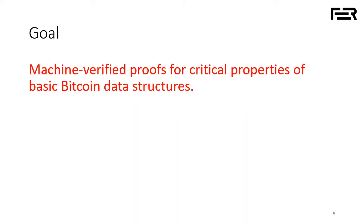The goal of this research is to provide formal models for the basic data structures of the Bitcoin system, use those formal models to specify, analyze, and ultimately provide machine-verified proofs for critical properties of those data structures — in particular, to show there are no issues like the two we just described.